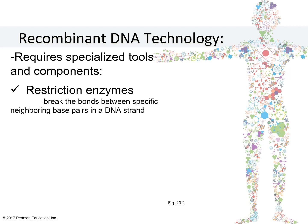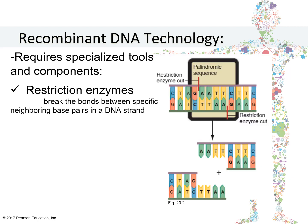The first component is restriction enzymes. These are naturally occurring enzymes in bacteria that break the bonds between specific neighboring base pairs in a DNA strand. There are many kinds of restriction enzymes, but the most useful in recombinant DNA technology are those that make their cuts in palindromic sequences.